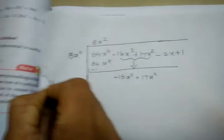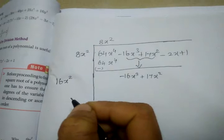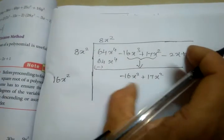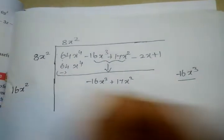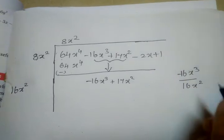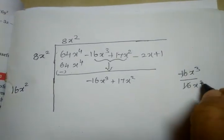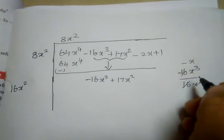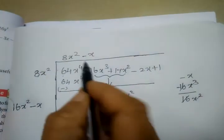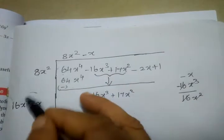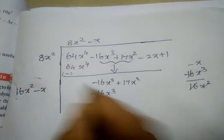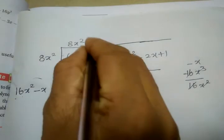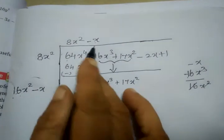Now 8 plus 8 is 16x square. We divide: minus 16x cube divided by 16x square. 16x cube divided by 16x square gives minus x. So the next quotient term is minus x. Minus x into 16x square gives minus 16x cube. x square into x is x cube. Coefficient 1 times 16 equals 16, so minus 16.